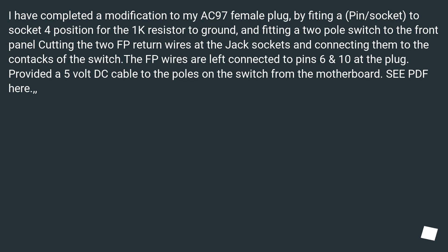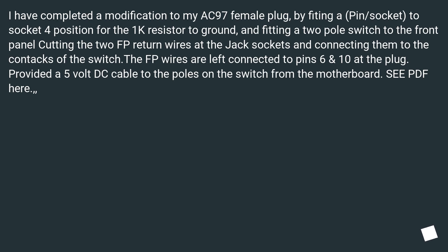I have completed a modification to my AC97 female plug by fitting a pin socket to socket position 4 for a 1K resistor to ground, and fitting a 2-pole switch to the front panel, cutting the 2 FP return wires at the jack sockets and connecting them to the contacts of the switch. The FP wires are left connected to pin 6 and 10 at the plug. I also provided a 5V DC cable to the poles on the switch from the motherboard.